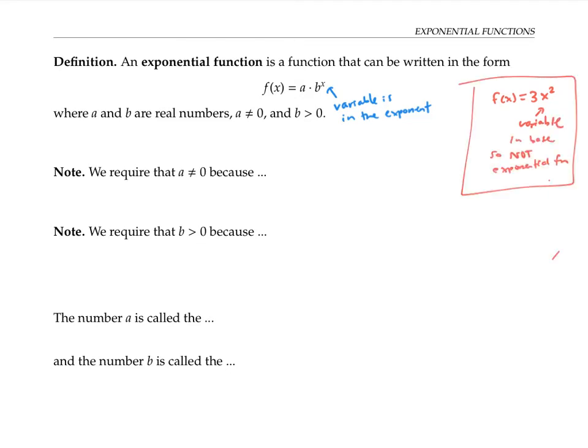For exponential functions f(x) = a·b^x, we require that a is not equal to zero, because otherwise we would have f(x) = 0·b^x, which just means f(x) = 0. And this is called a constant function, not an exponential function, because f(x) is always equal to zero.